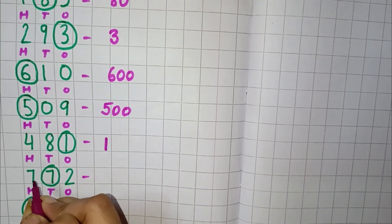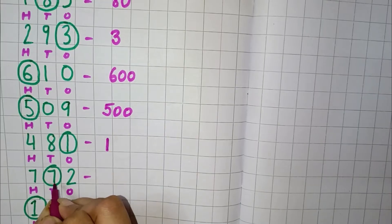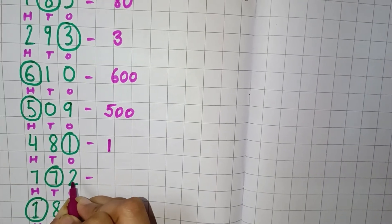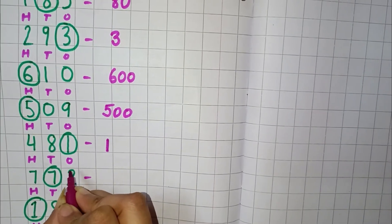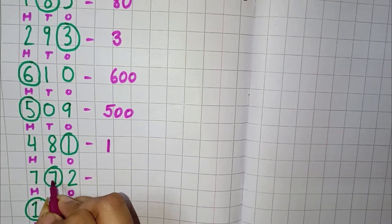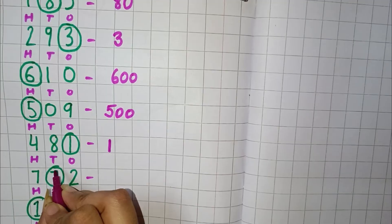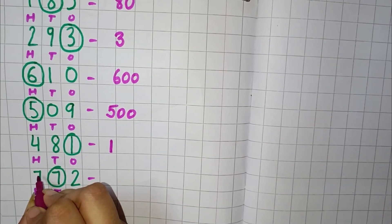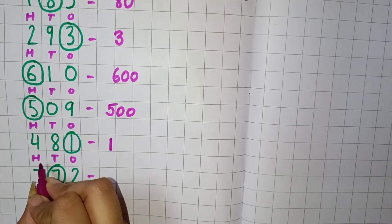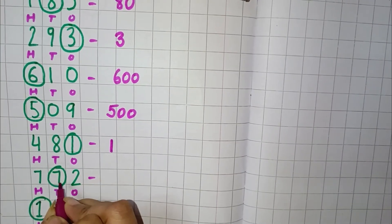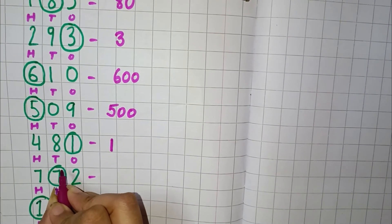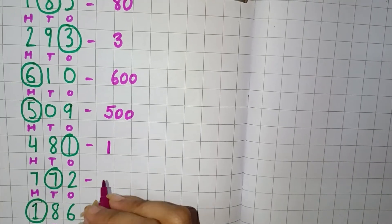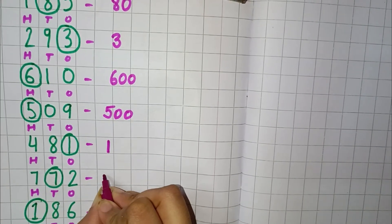Now we have 772. Here 2 is in the 1's place, 7 is in the 10's place, and another 7 is in the 100's place, and this 7 is circled. So we will write here 70.